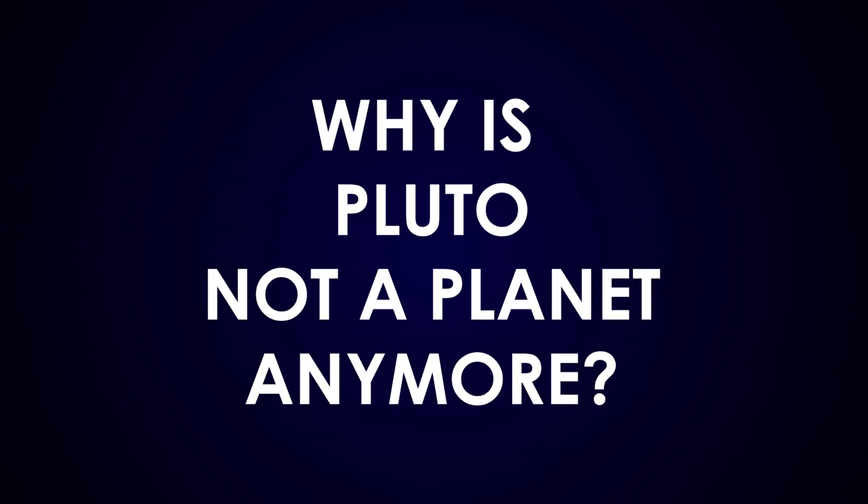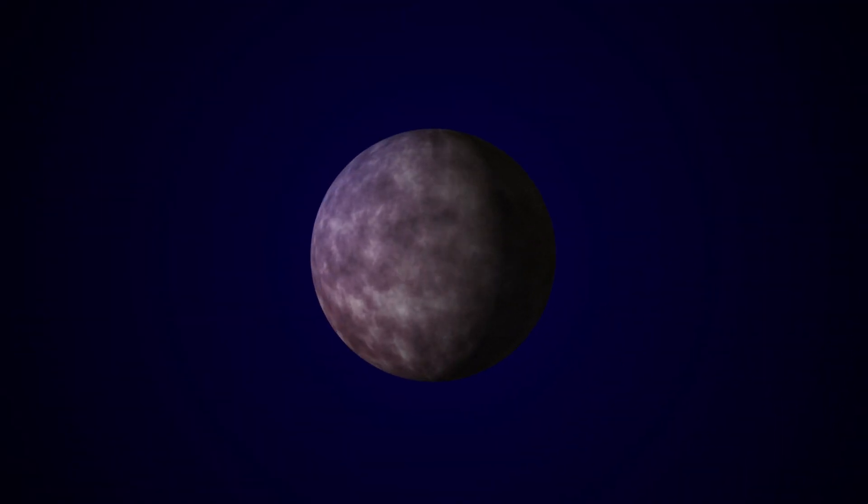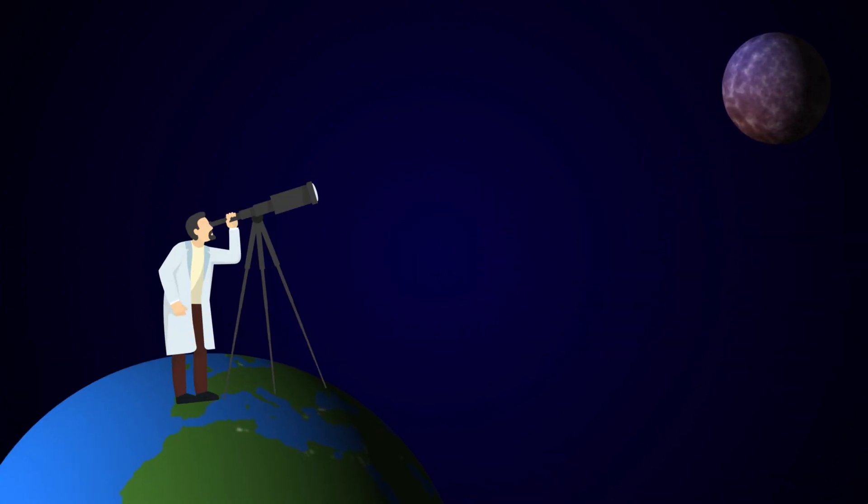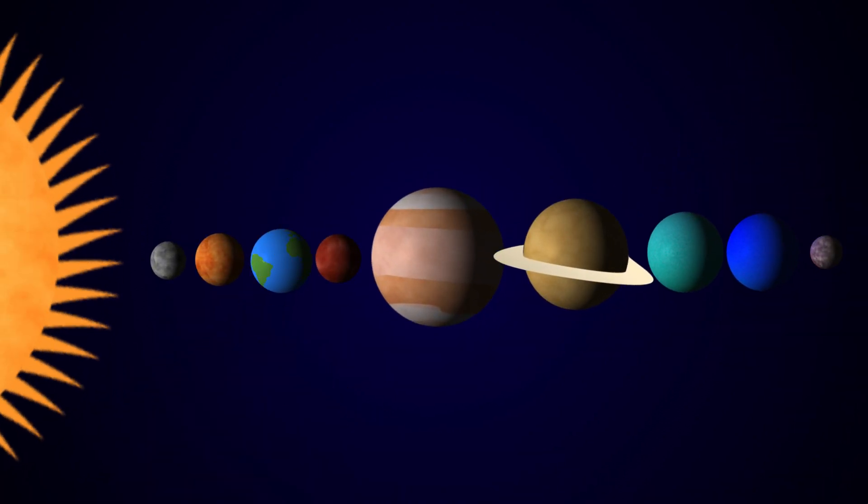Why is Pluto not a planet anymore? Pluto was discovered in 1930 by Clyde Tombaugh and was considered to be the ninth planet of our solar system up until recently.